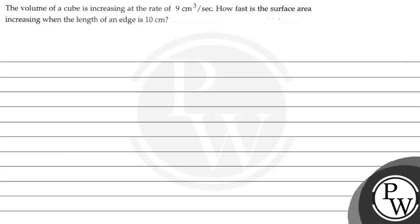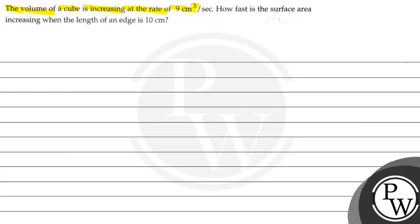Let's first read the question. The question says that a volume of a cube is increasing at a rate of nine centimeters cubed per second. How fast is the surface area increasing when the length of the side h is 10 centimeters? The key concept of this question is the rate of change.